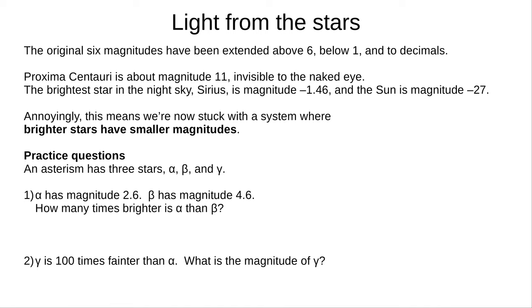Let's try some practice questions. An asterism has three stars, alpha, beta, and gamma. Question one. Alpha has magnitude 2.6. Beta has magnitude 4.6. How many times brighter is alpha than beta? Question two. Gamma is 100 times fainter than alpha. What is the magnitude of gamma? Pause the video now to try these.